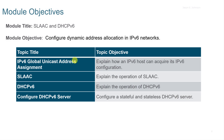In this video, we're going to look at the following objectives: explain how an IPv6 host can acquire its IPv6 configuration, explain the operation of SLAAC, explain the operation of DHCPv6, and then configure a stateful and stateless DHCPv6 server.